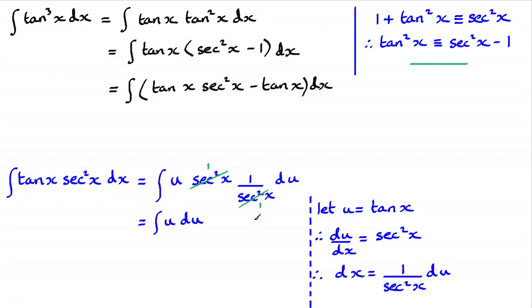Now we can integrate this very easily. The integral of u with respect to u is going to simply be u squared over 2, just by adding 1 to the power and dividing by the new power. Or you could write it as a half u squared. And then I just substitute back my u as tan x, so you've got a half tan squared x.